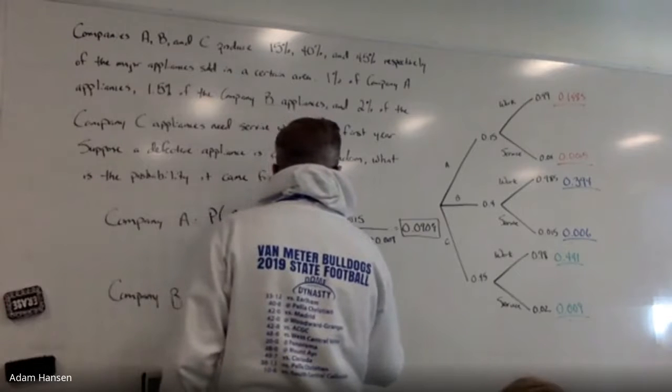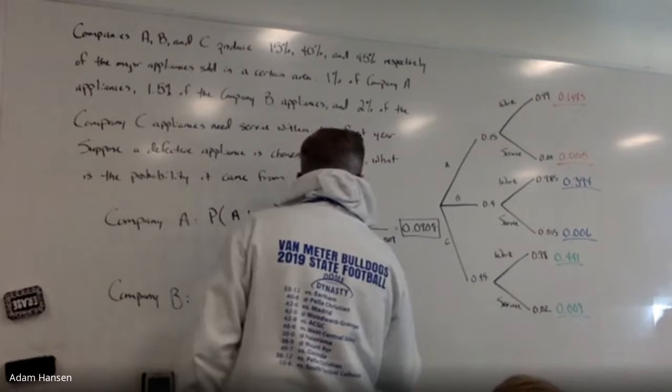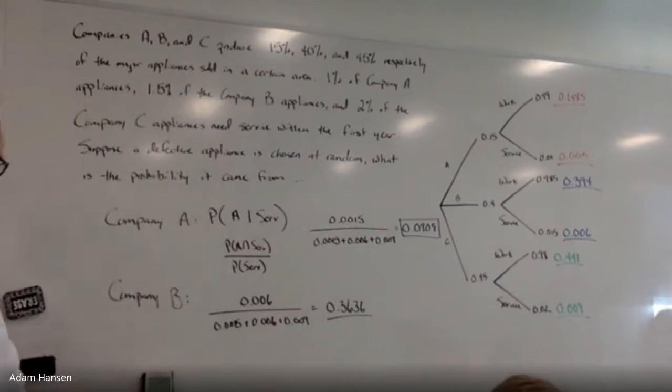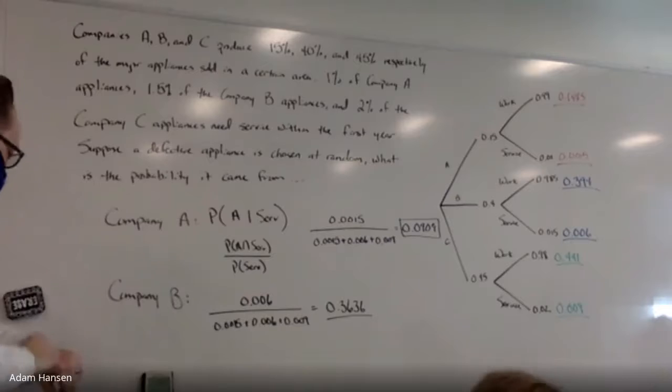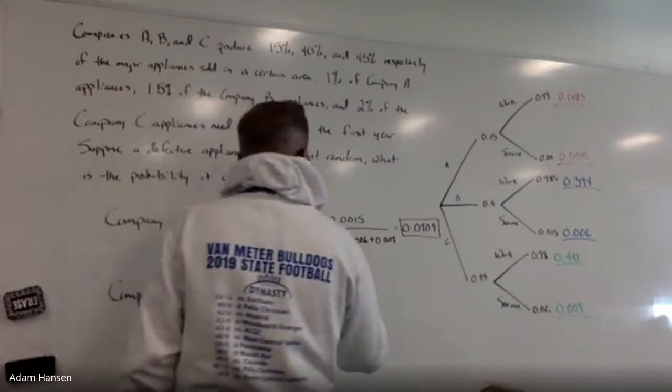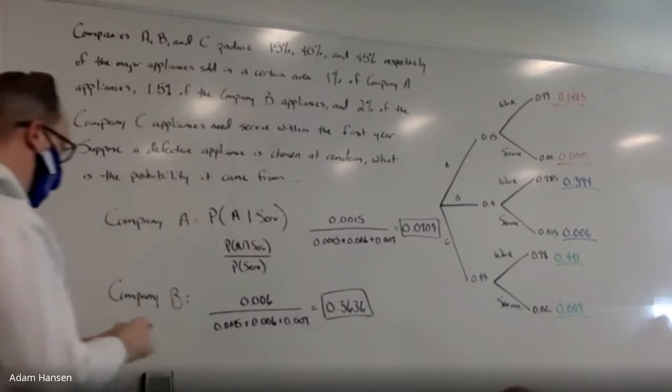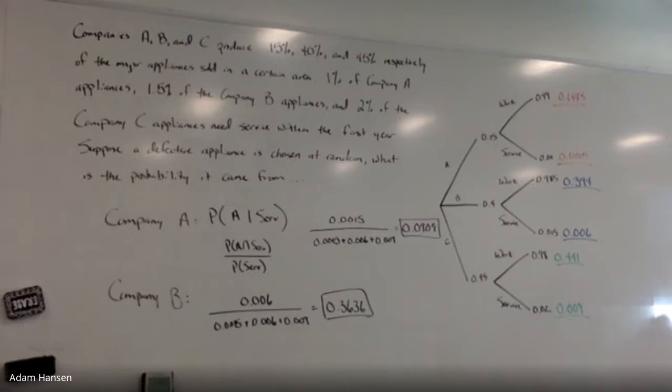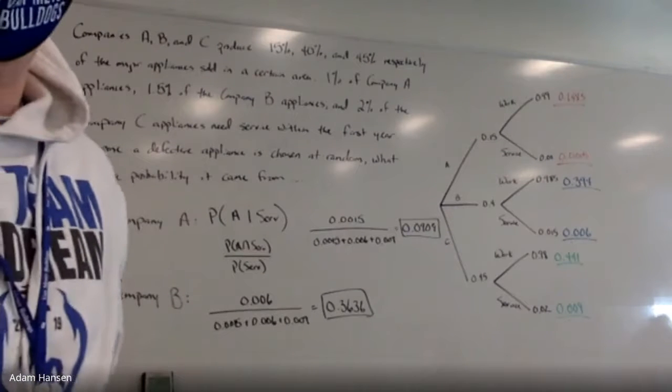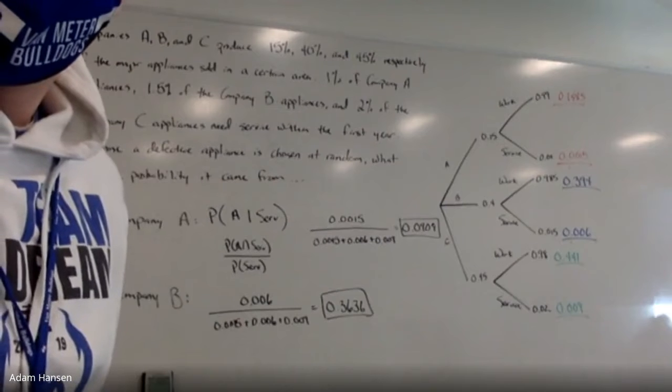Group B appliances had a higher service rate, half a percent higher than group A. So if I know it's defective, it's more likely to have come from Company B than Company A. Company C would be even higher still. They had a higher defective rate than Company A or Company B.